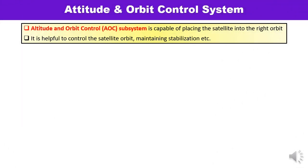The attitude and orbit control subsystem is capable of placing the satellite into the right orbit and is also helpful to control the satellite orbit, besides maintaining stabilization and maintaining the position of the satellite. In some cases, the control can be affected from the satellite itself and from the ground.